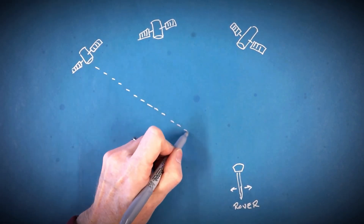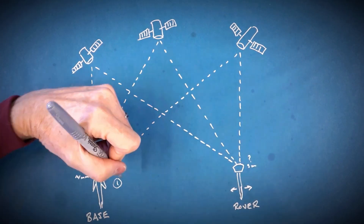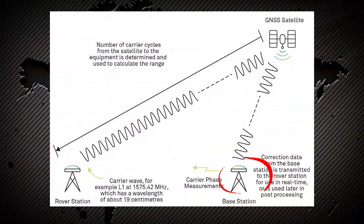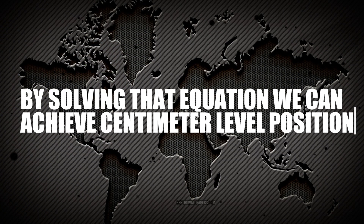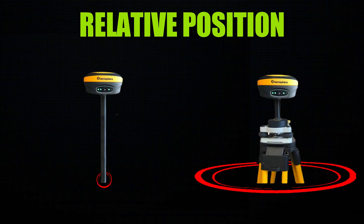To get our centimeter-accurate position, we focus on the carrier wave of the signals from our satellites. We know the wavelength being broadcast and the number of cycles it takes to reach us from each satellite. By comparing the measurements at both the base and rover and solving the integer ambiguity problem, we can achieve centimeter-level position relative between the base and the rover. That relative aspect is important — we have centimeter-level precision relative to our base. So if our base has a half-meter offset from its autonomous position, our rover will also carry that offset. That's why we need to do things like localizations or set up our base over a known point.